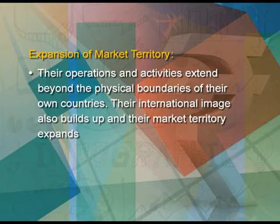The next feature of MNCs is expansion of market territory. Their operations and activities extend beyond the physical boundaries of their own countries. Their international image also builds up and their market territory expands, enabling them to become international brands. They operate through a network of subsidiaries, branches, and affiliates in host countries. Due to their giant size, they occupy a dominant position in the market. Centralized control: they have their headquarters in their home country and exercise control over all the branches and subsidiaries.